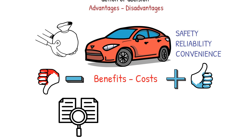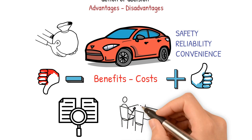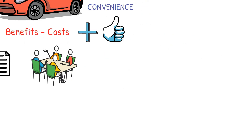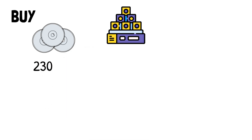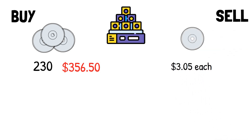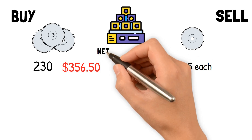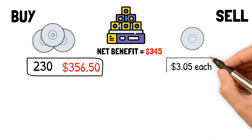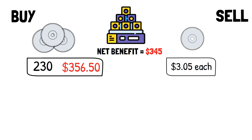It is an essential concept in economics and decision-making, as it helps individuals and organizations evaluate the potential outcomes of different actions or choices. Assume you have a used CD store. You can purchase 230 compact discs for $356.50 at an estate sale and sell the CDs for an average of $3.05 each. To find the net benefit of buying the CDs at the estate sale and selling them in your store, we need to determine the total revenue from selling them and subtract the cost of purchasing them.